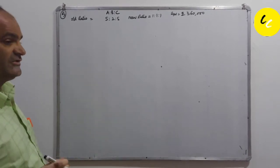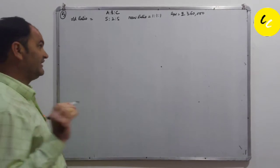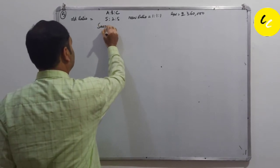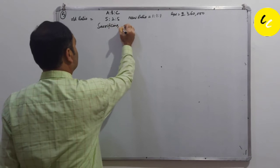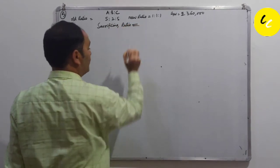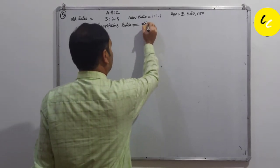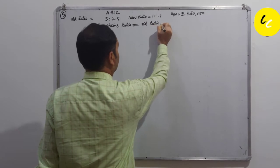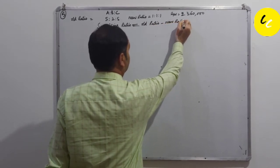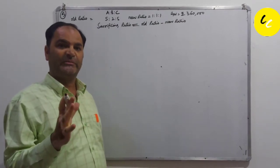First of all we will find out the sacrificing ratio. Sacrificing ratio is equal to old ratio minus new ratio.